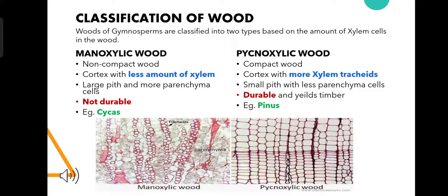Pycnoxylic wood is a compact wood in which the cortex has more xylem tracheids and the pith is very small with less parenchymatous cells. It is durable and hence economically beneficial, and can be used as timber. Example: Pinus.